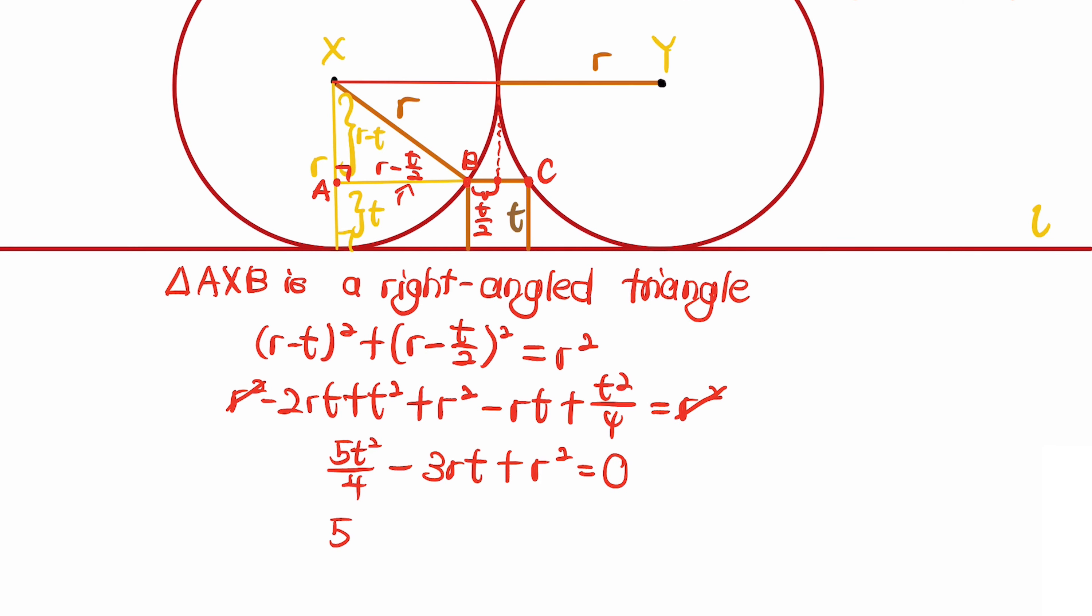We can factorize this to get (5t - 2r) times (t - 2r) equals 0. Obviously (t - 2r) is not equal to 0.